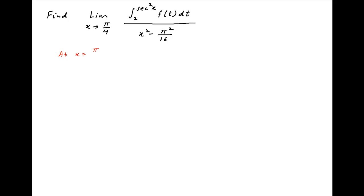At x equal to π/4, the denominator x² − π²/16 is equal to (π/4)² − π²/16, which is equal to 0.